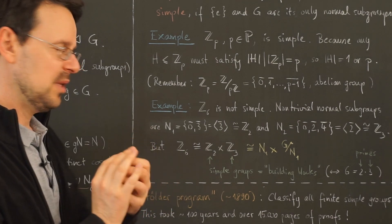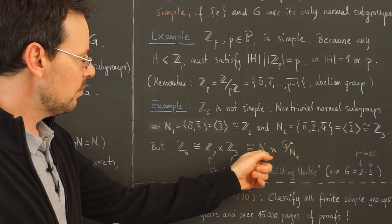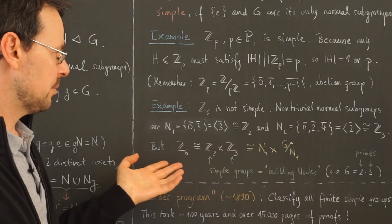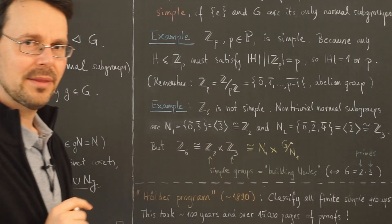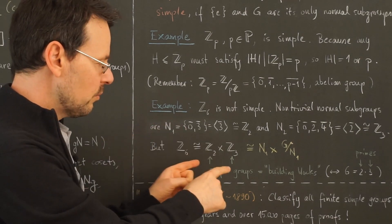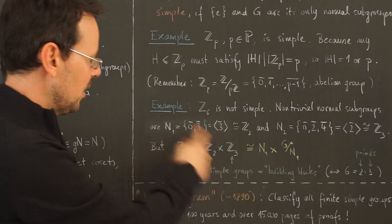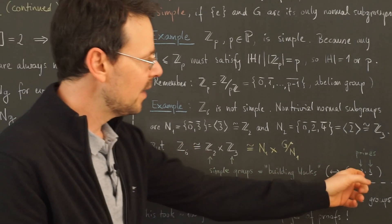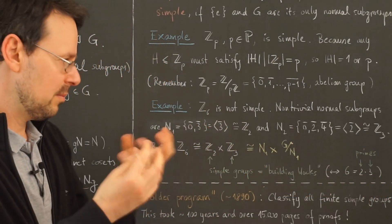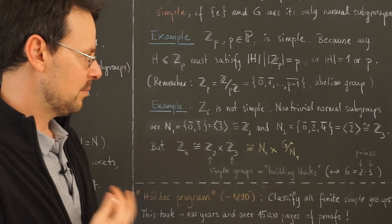So this group can be decomposed in a way into a simple subgroup and the direct product of the quotient of G with this simple group, which again is another simple group. So in this rather vague sense, the simple groups are kind of the building blocks or the atoms out of which other groups consist in the same way that the prime numbers are the atoms or building blocks of the numbers in the sense that every number can be written as a product of primes.